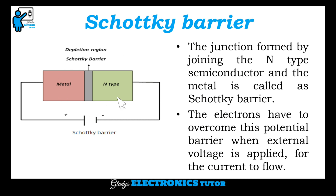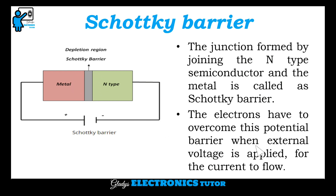This is the Schottky Barrier. The junction formed by joining the N-type semiconductor and the metal is called the Schottky Barrier. The electrons have to overcome this potential barrier when external voltage is applied for the current to flow.